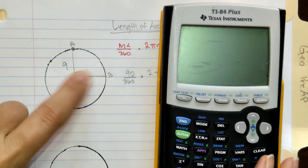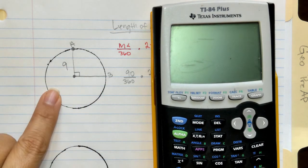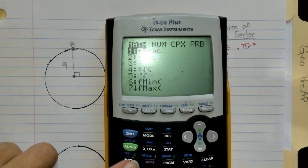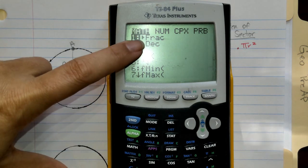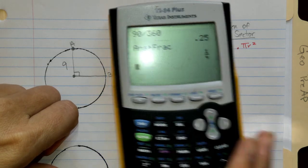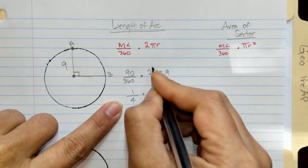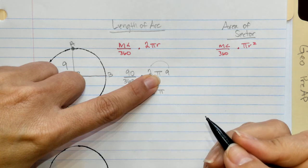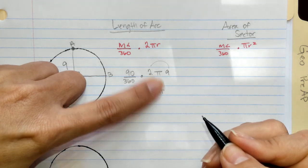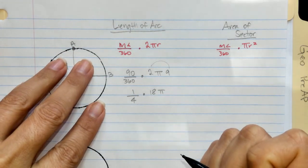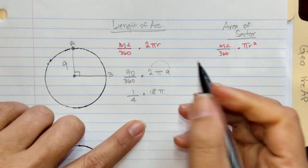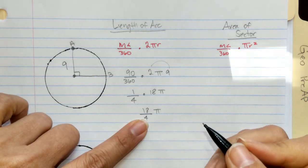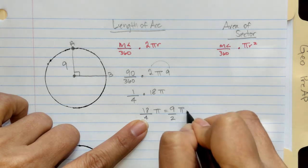We take the 90-degree angle over 360 and multiply by 2π times radius 9. 90 over 360 reduces to one-fourth — use the math button on your calculator to keep it in fractional form. One-fourth times 2×9 gives us 18π. Then 1 times 18 over 4 gives us 18π/4, which reduces to 9π/2 units.